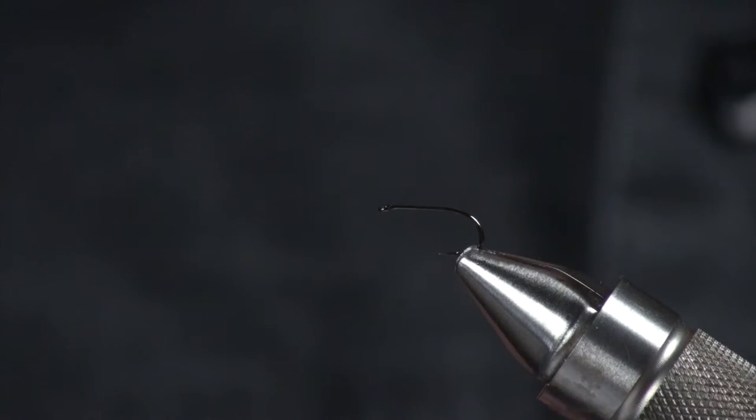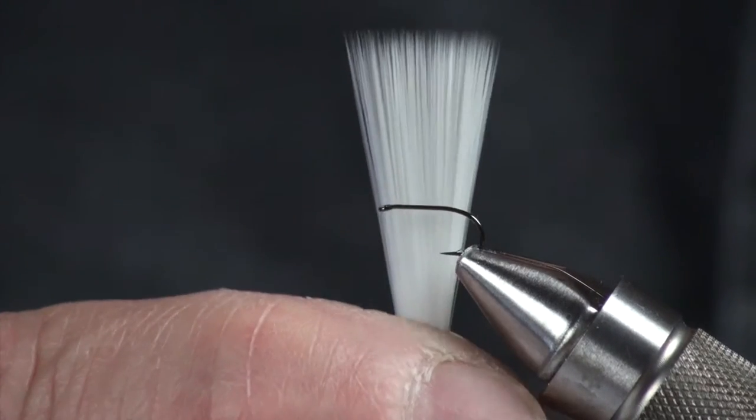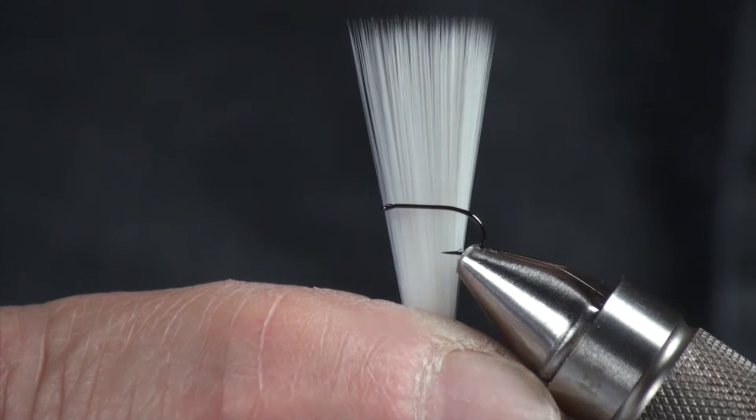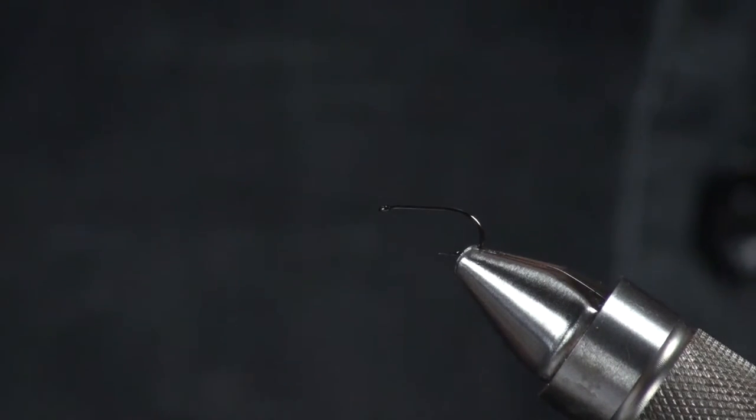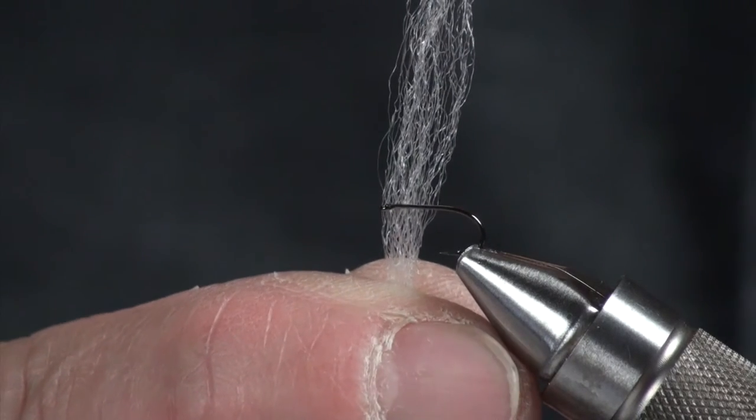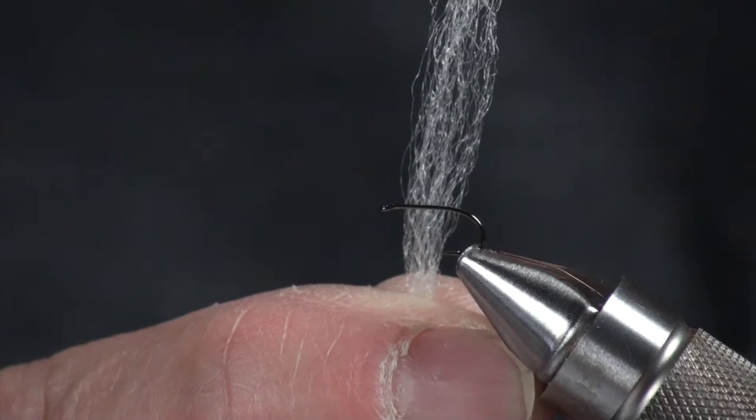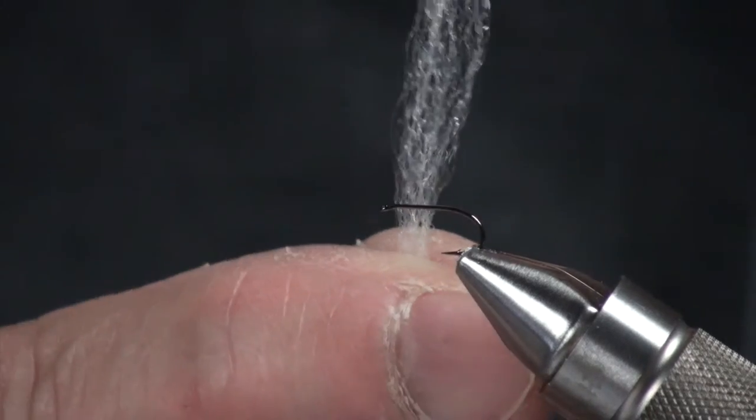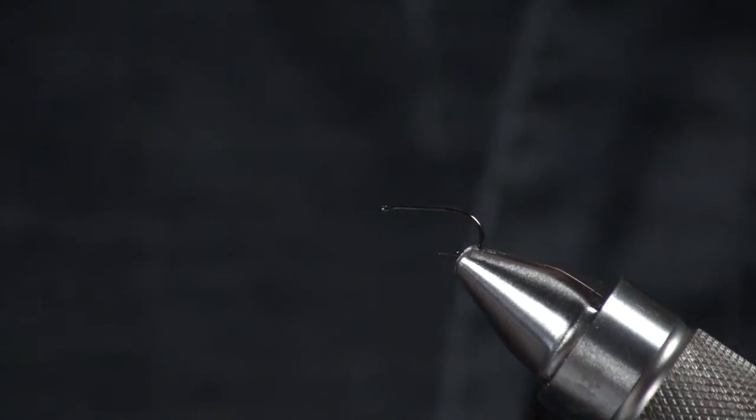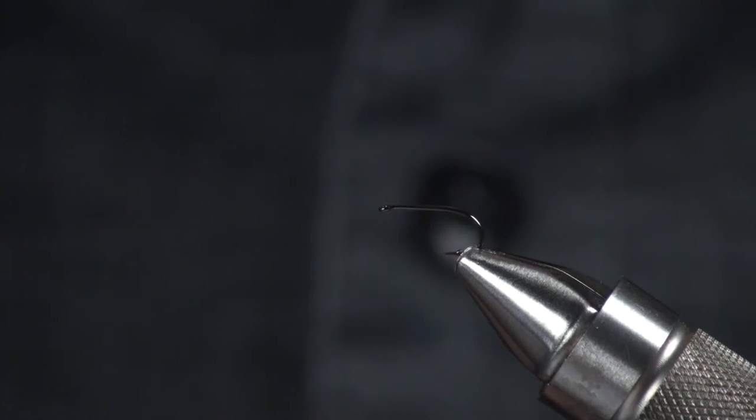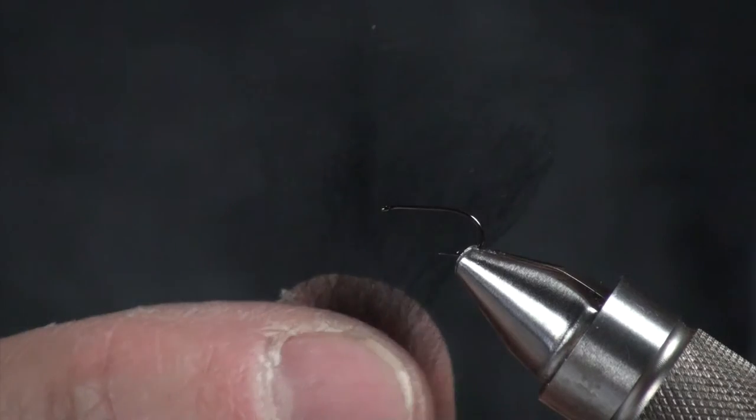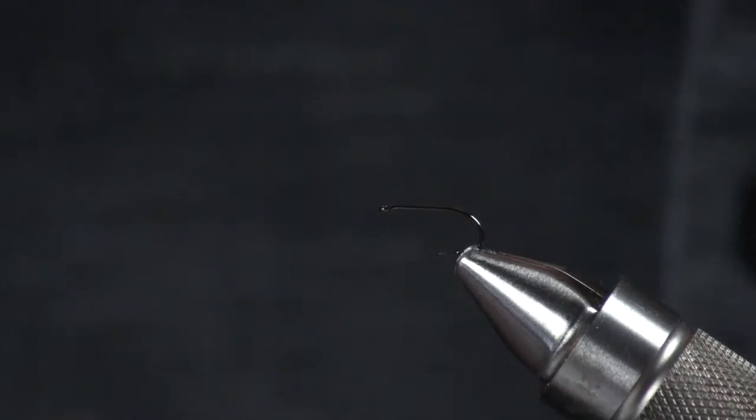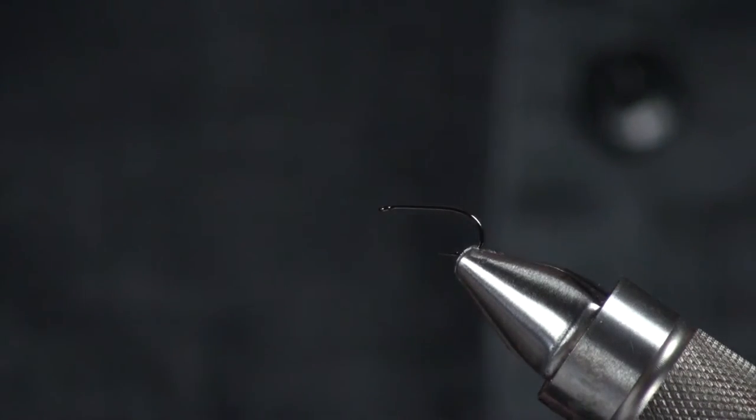I'm going to tie in some Micro Phi Betts from our friend John Betts in white. The wing is going to be some white Zelon, again a John Betts product. And then for the thorax I'm just going to dub in a little bit of black fine dubbing.